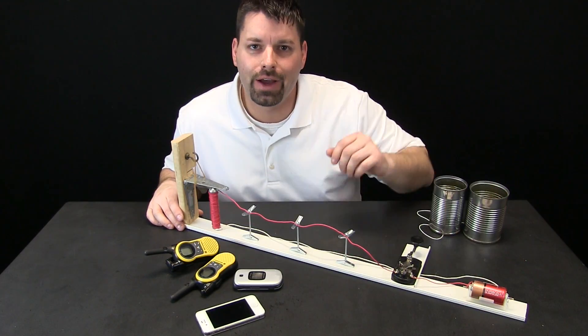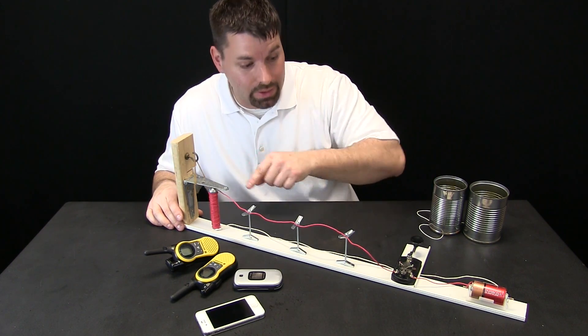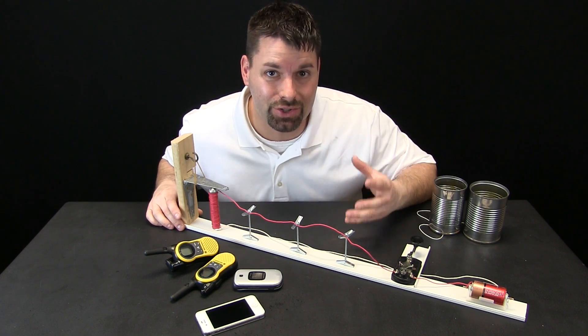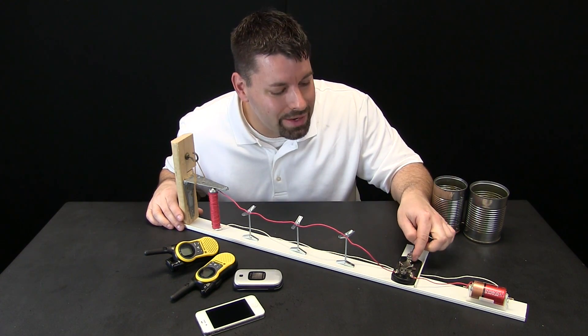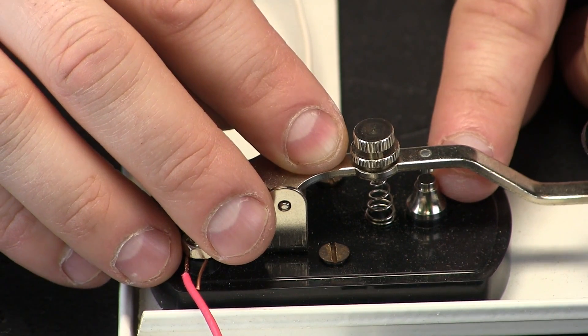Let us see how this works. The battery is going to provide our electricity, but nothing is happening right now because there is a break in the flow of the electricity. There is a break in our circuit, and that break is right here in our telegraph lever. We are going to zoom in and take a closer look so you can see that break.